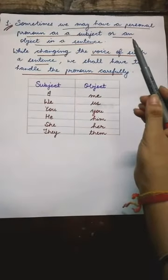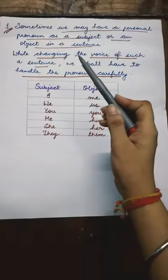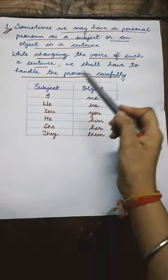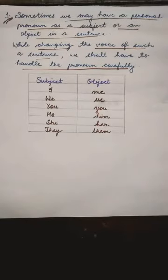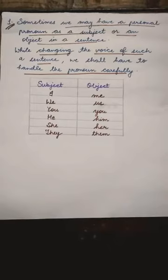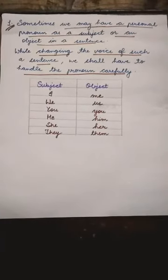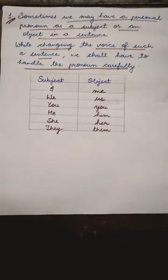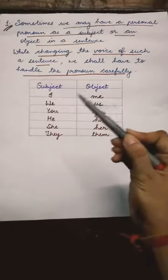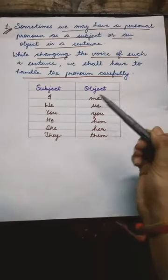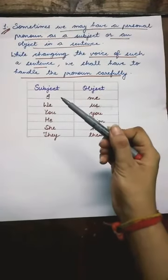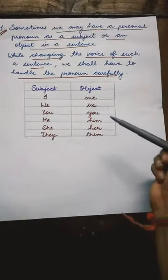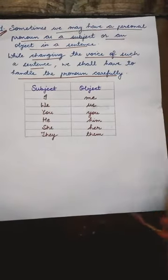Sometimes we may have a personal pronoun as a subject and an object in a sentence. While changing the voice of such a sentence, we shall have to handle the pronoun carefully. कई बार हमारे sentence में subject की place में या object की place में personal pronouns दिये गए होते हैं. So while changing the sentence from active into passive voice, हम इन pronouns को ध्यान में रख कर change करेंगे. I changes into me, we changes into us.